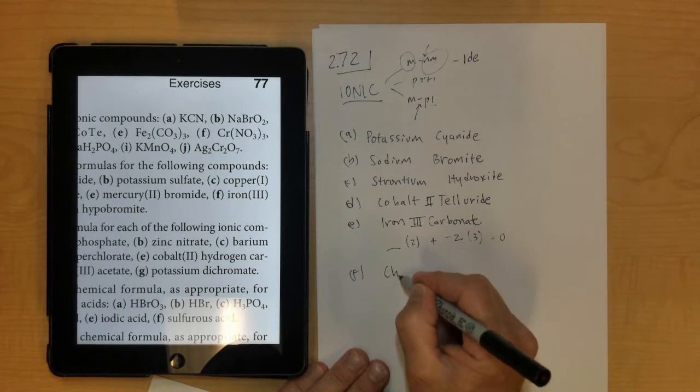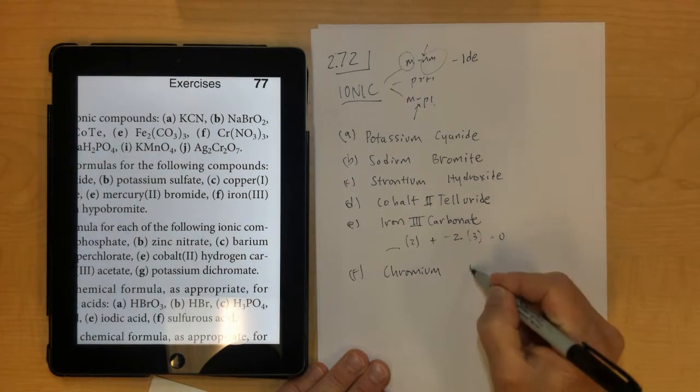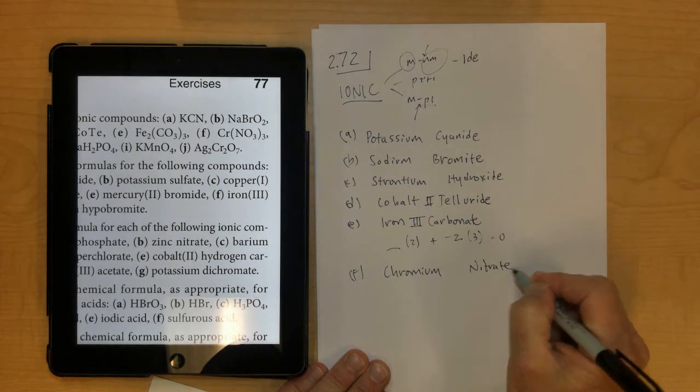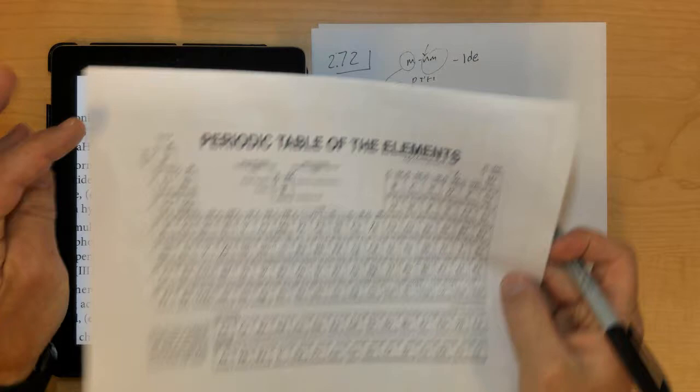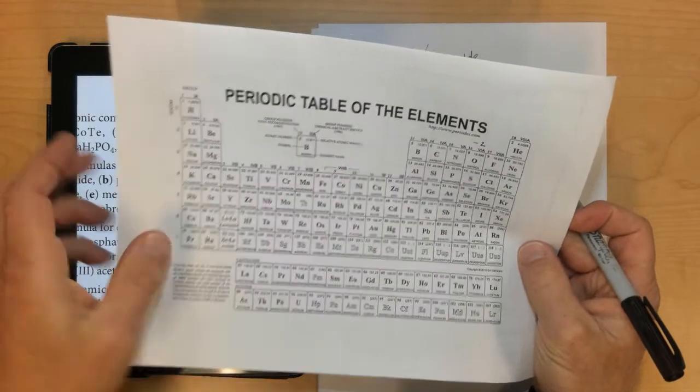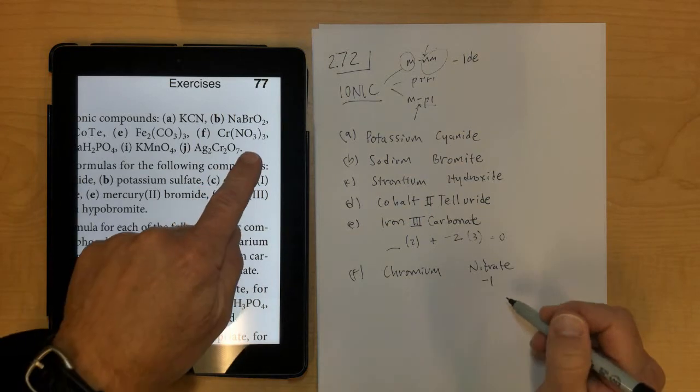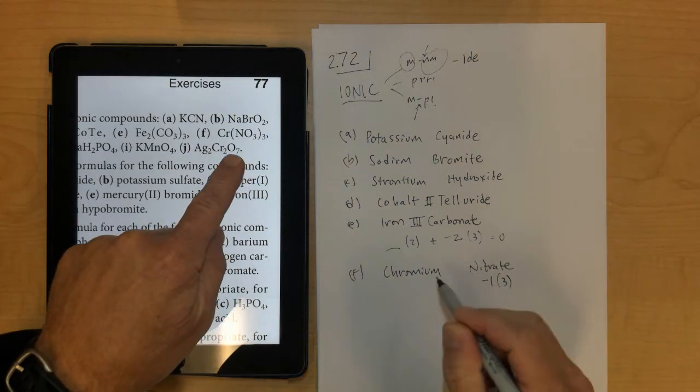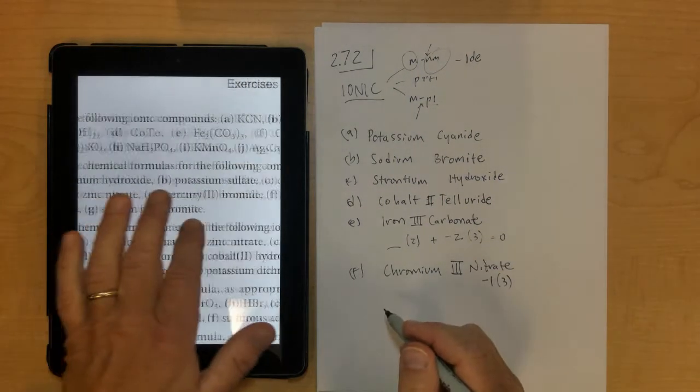Letter F, chromium, and then NO3 stands for nitrate, a polyatomic ion that you have to memorize, and it's also back here. Chromium is not in group 1 or group 2, so it's going to need a Roman numeral. We know that nitrate is negative 1. There's 3 of them in the formula, so that means chromium must be positive 3 to balance that out, so chromium 3 nitrate.